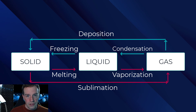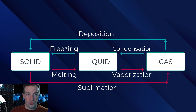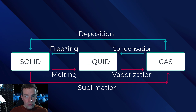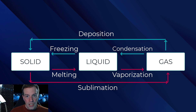Solids, liquids, and gases can change into each other depending on whether energy is being added or removed. Adding energy can take matter from a solid to a liquid, or a liquid to a gas. If we remove energy and have less kinetic energy, then we have condensation and freezing. That's how matter changes state.